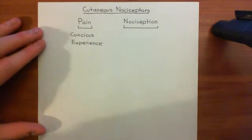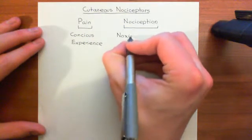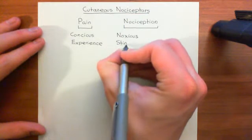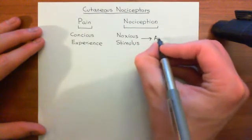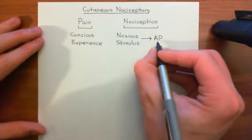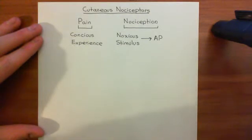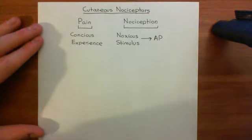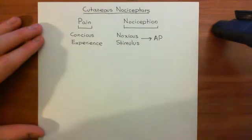Nociception is something far more crude and something far easier to understand — it's something we do understand. Nociception is all about how you take a noxious stimulus, which just means a painful stimulus. The fancy name for a painful stimulus is to call it a noxious stimulus. So nociception is all about taking noxious stimuli and converting them into action potentials in sensory neurons. So, nociception is really just the transduction of noxious stimuli into action potentials within sensory neurons. That's something far easier to quantify and define and study.